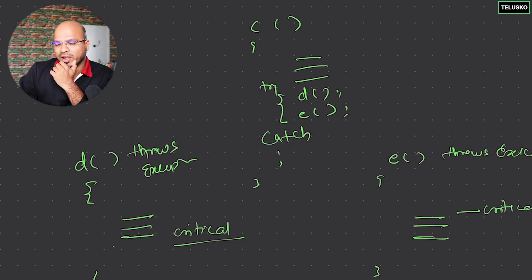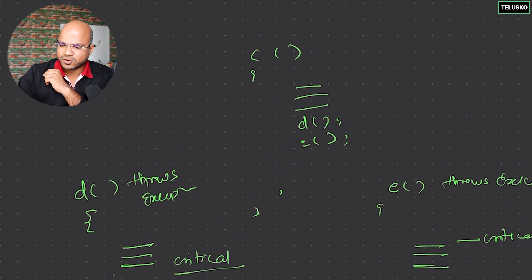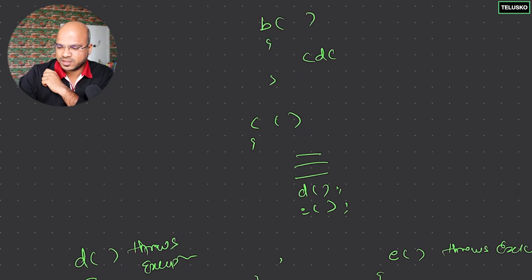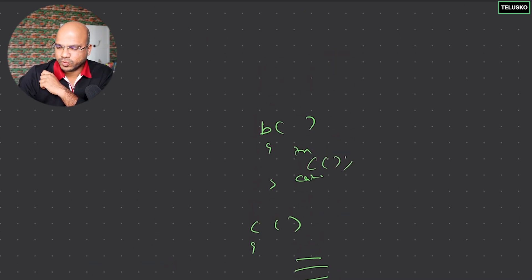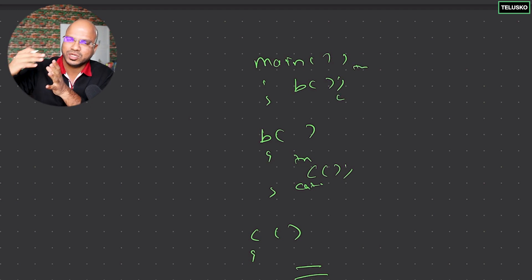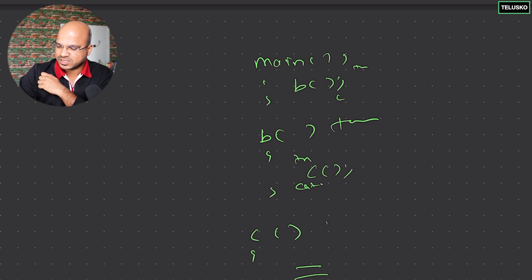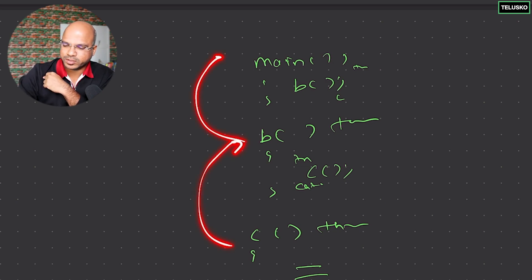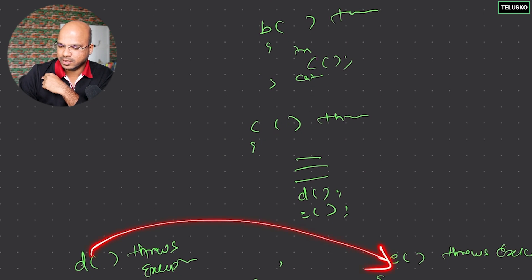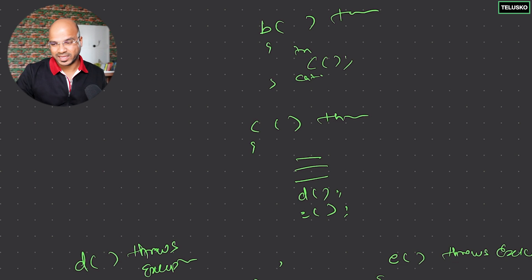In `c`, of course, you must have try-catch. If you don't, it will stop execution again. Now if `c` also doesn't want to handle it, some method `b` calling `c` can handle it instead. And if `b` doesn't want to, even `main` can have a try-catch. So you can go up the call ladder — `d` and `e` say `c` will handle it, `c` says `b` will handle it, `b` says `main` will handle it.